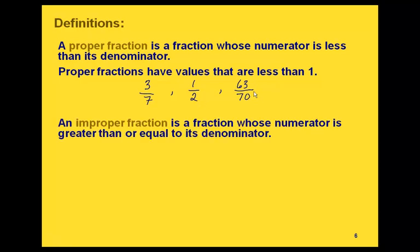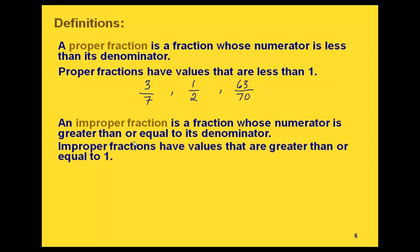An improper fraction is a fraction where the numerator is greater than or equal to the denominator, and improper fractions have values greater than or equal to 1. Some examples: 8 fifths, because the numerator 8 is greater than the denominator 5; 4 over 4, where the numerator and denominator are the same value; and 99 over 98, because 99 is greater than 98.